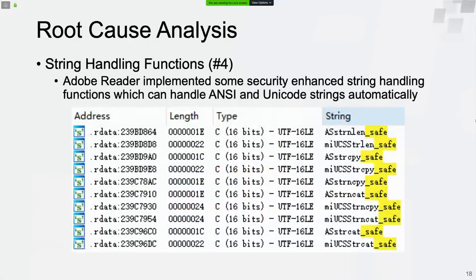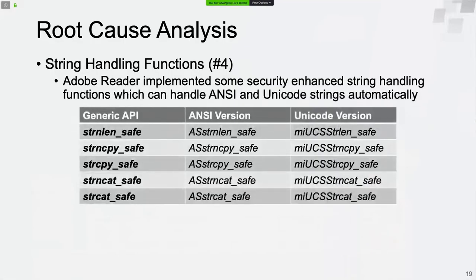Before diving into the vulnerabilities, let's talk about their root causes. Adobe Reader implemented some security-enhanced string handling functions — we can search for the string '_safe' to locate them in IDA. This table shows the details of these functions. There are two versions: one to handle ANSI strings and one to handle Unicode strings, plus some generic functions that check the string type and redirect the request to the corresponding function.